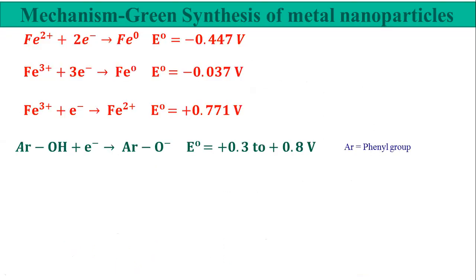Here I have mentioned three half-cells of iron. The first: Fe²⁺ is converted to Fe⁰ with a potential of -0.447 V. The second: Fe³⁺ gaining three electrons is converted to Fe⁰. The third half-cell is Fe³⁺ gaining one electron converted to Fe²⁺, having a potential of +1.771 V (actually +0.771 V, as referenced).